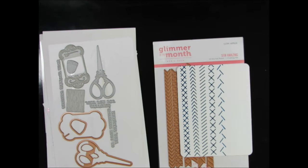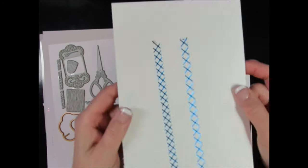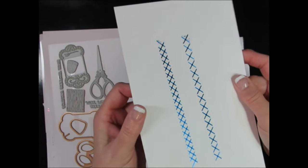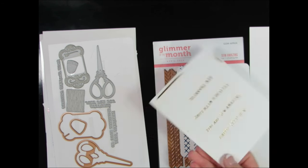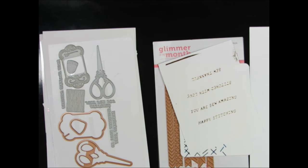And I'm using the Glimmer of the Month, which is called So Amazing. And off camera I glimmered that with Cobalt Glimmer hot foil. By the way, when you order a Glimmer of the Month kit, you not only get a fabulous new Glimmer of the Month kit, you also get a new roll of hot foil—a full roll. And this month the color is Cobalt.